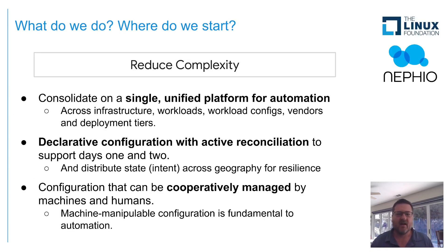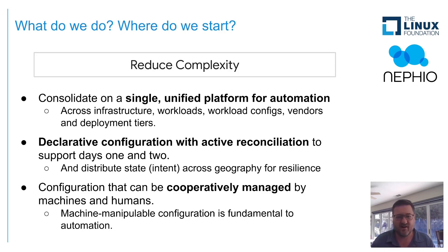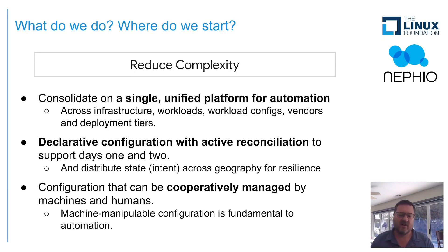So what do we do? Nefio contends that the first place we have to start is reducing complexity and simplifying as much as we can. The first step is unifying on a single platform for automation — not replacing all existing automation, which would be effectively impossible, but providing APIs and hooks to access those automations in a predictable, consistent way so we can write automations that understand the different layers and how they work together.